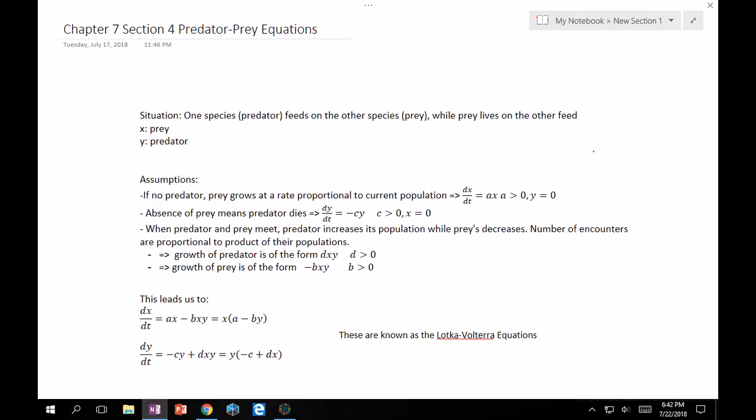The absence of prey means that predator dies. So the assumption is that the predator can only eat the prey, and so that means that the change in population of the predator is going to equal to some minus C constant times Y, where C is greater than zero, and then X is equal to zero, aka the prey population is extinct.